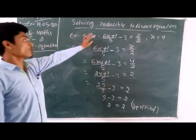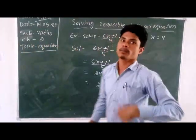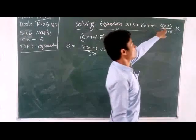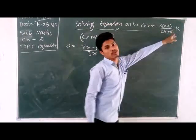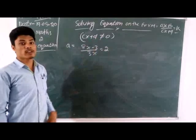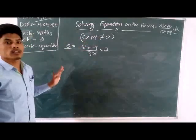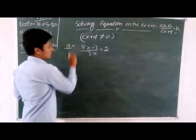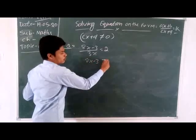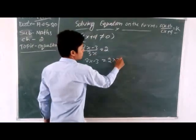Now we know about solving equations from another process. We solve equations of the form (ax + b)/(cx + d) equals k. That means the denominator cx + d must not equal zero. The denominator can never be divided as zero.